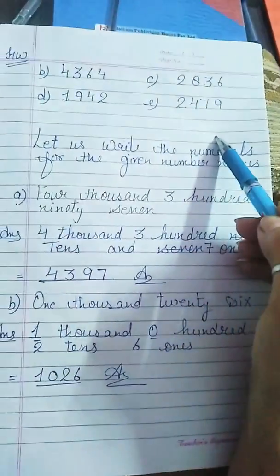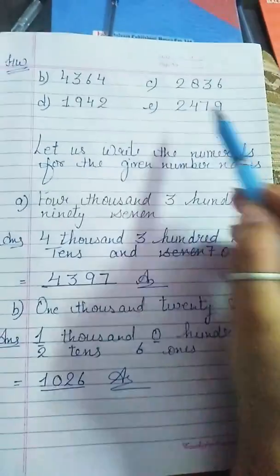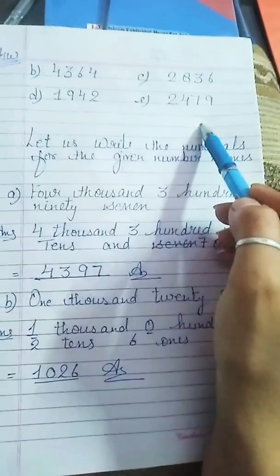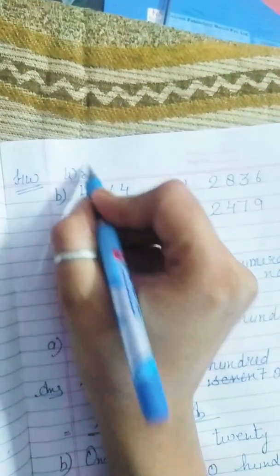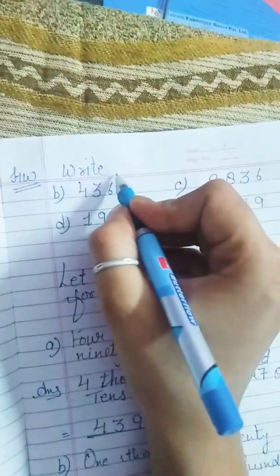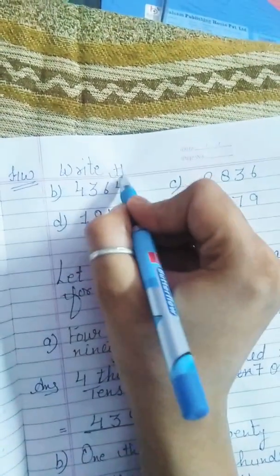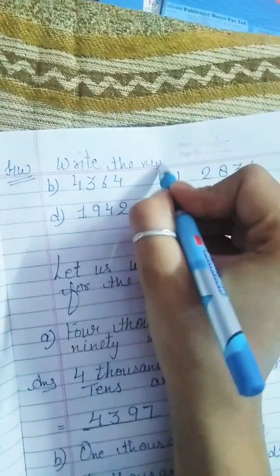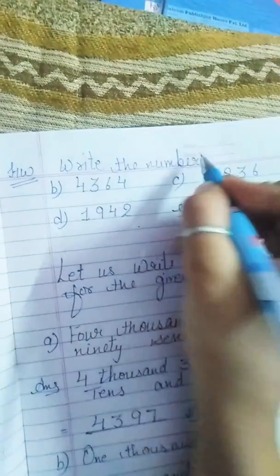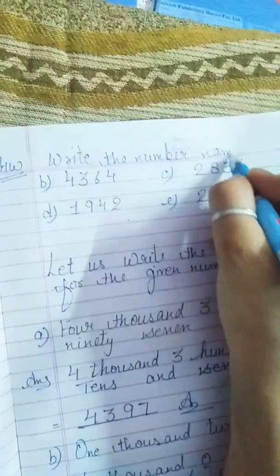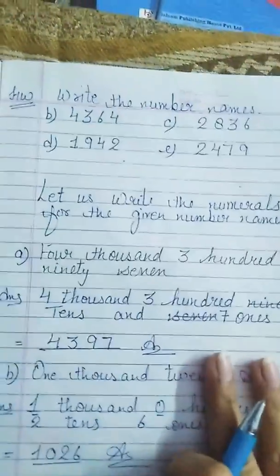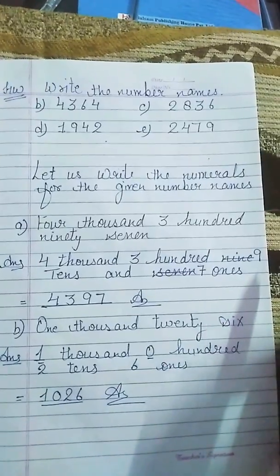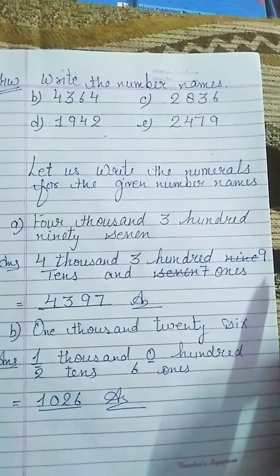Now, it's your homework. Just note it down. Iski aapko spelling liekhna hai hai. Write the number names. With the help of place value chart. Now, let us write the numeral for the given numbers.